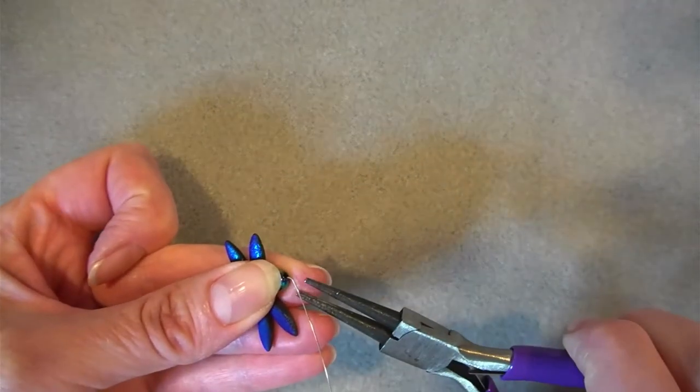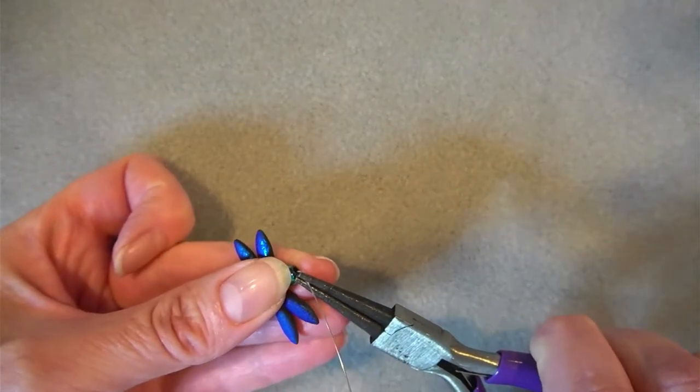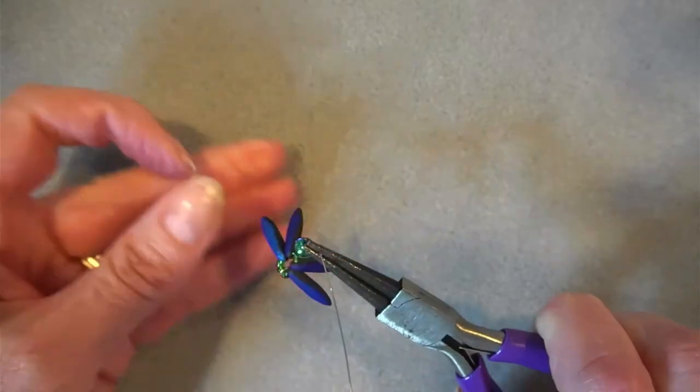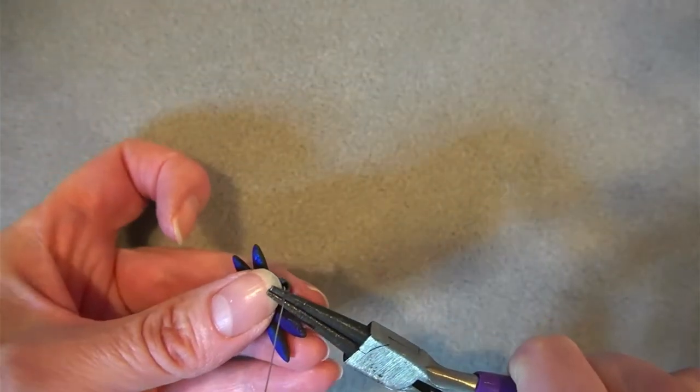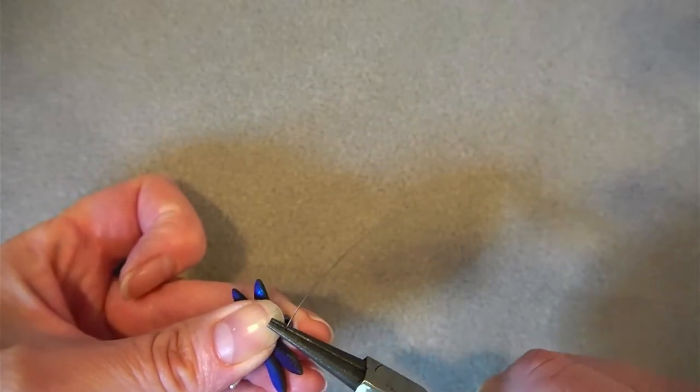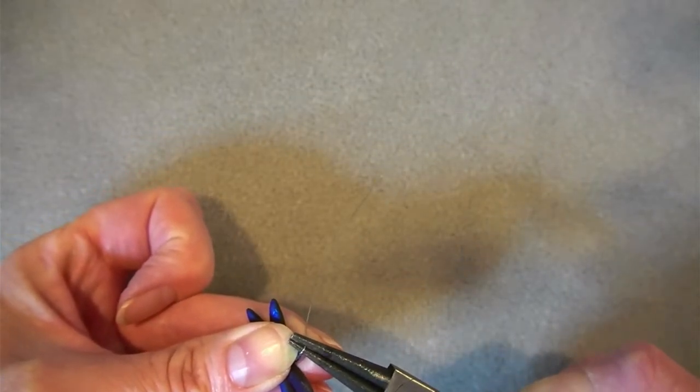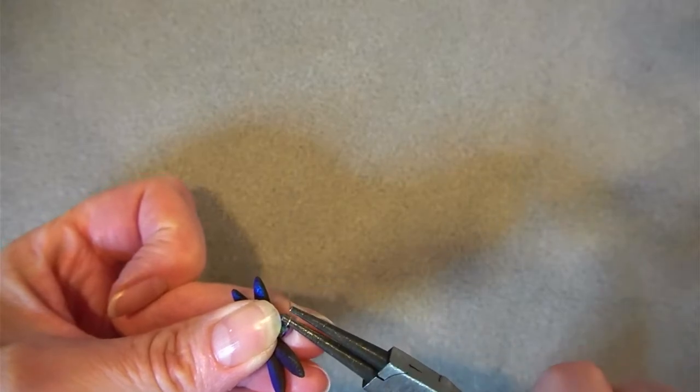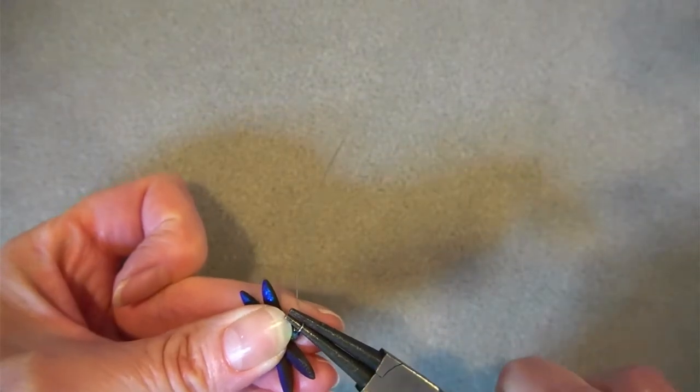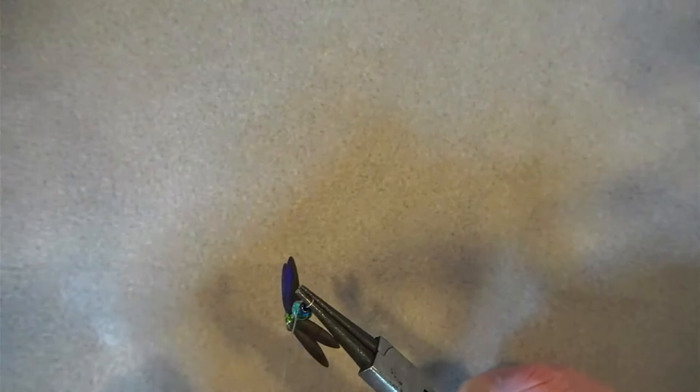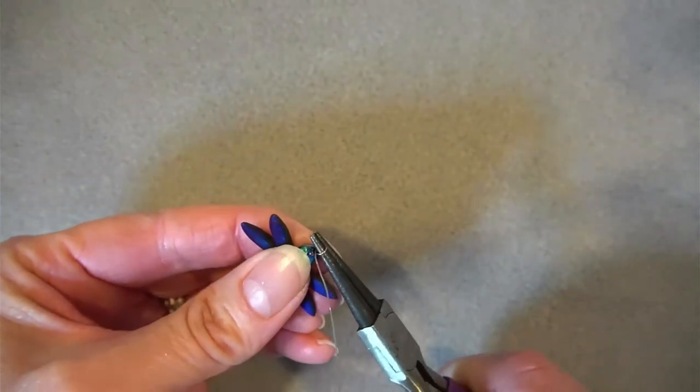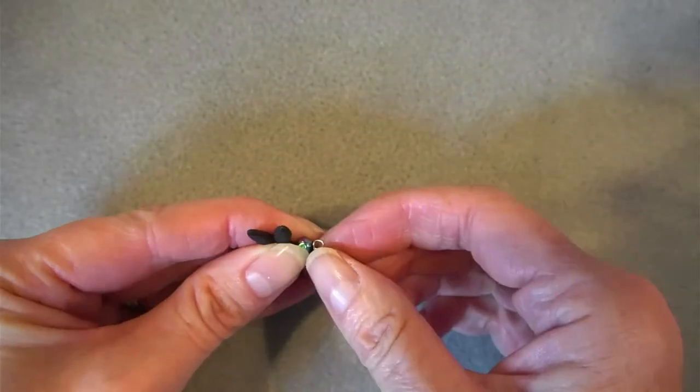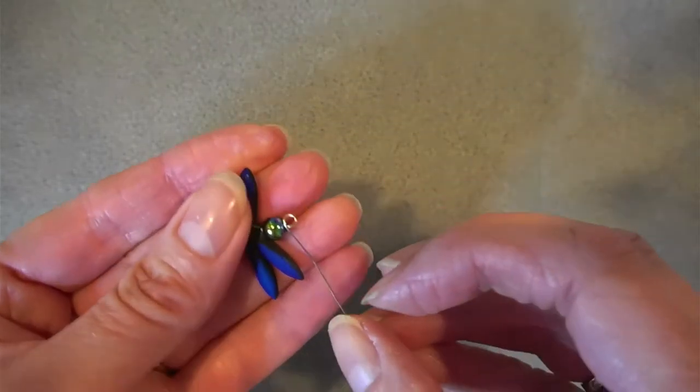And then I'm going to take my round nose pliers. Now this doesn't want to be a huge loop, so putting your wire quite close to the end is fine. And I'm going to twist as far as my wrist will turn, and then take the pliers out, pop them back in on the lower jaw, and twist a bit more. And I want to pull that wire across. So now I have this.